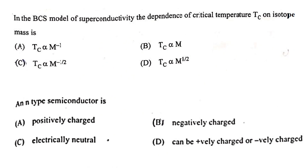In the BCS model of superconductivity, the dependence of critical temperature Tc on isotope mass M is given by: Tc is directly proportional to M^(−1/2).